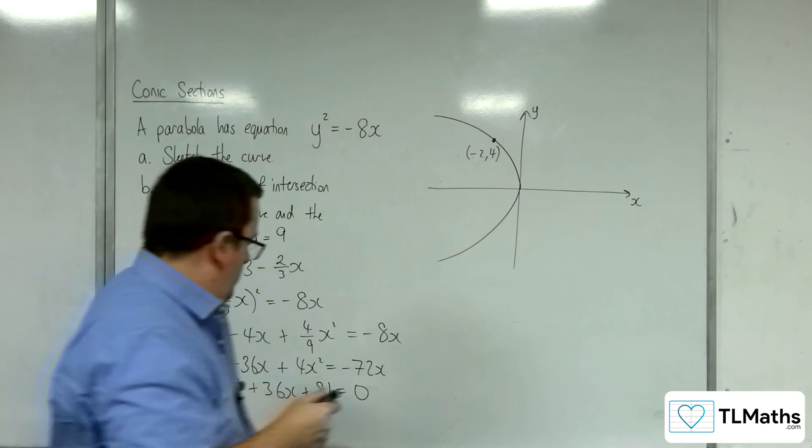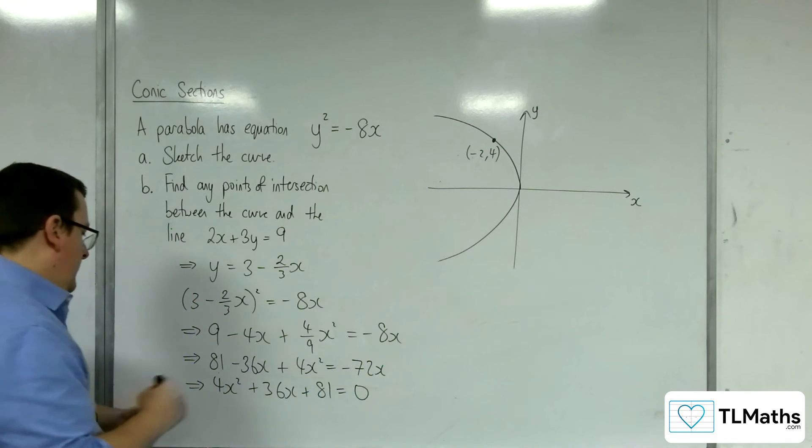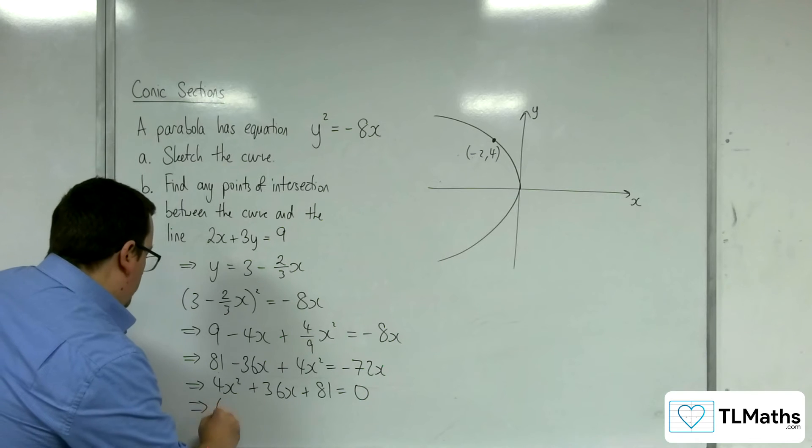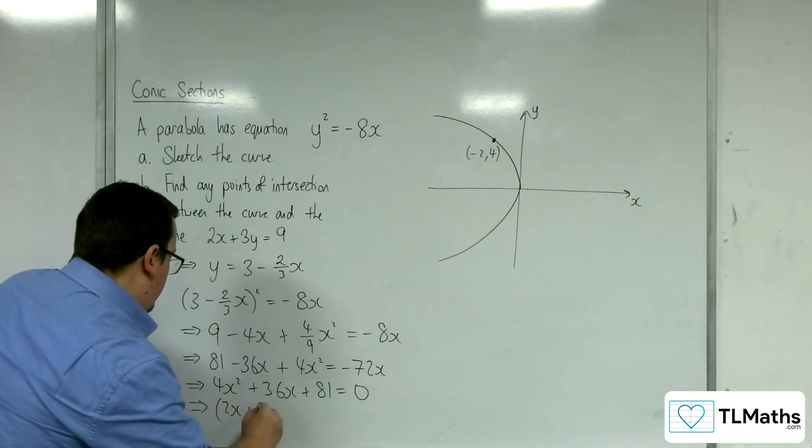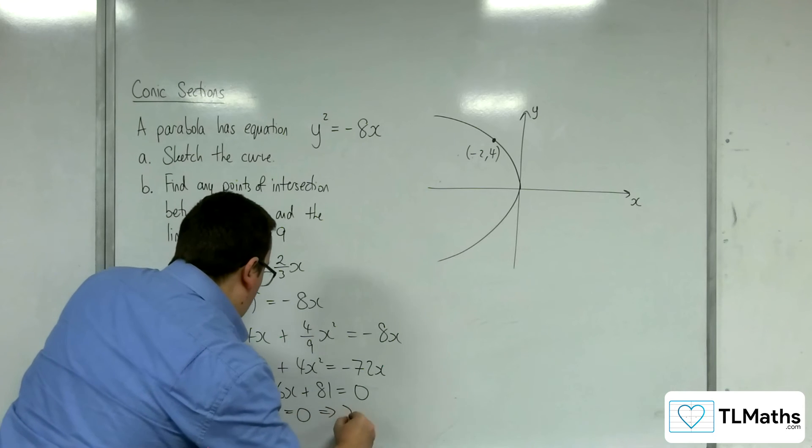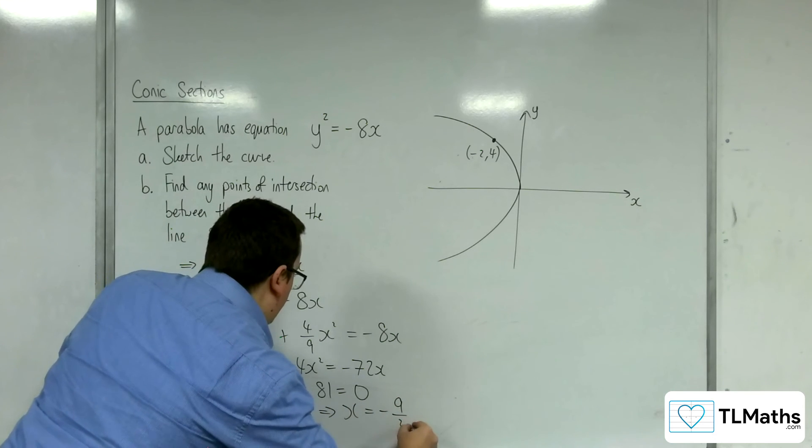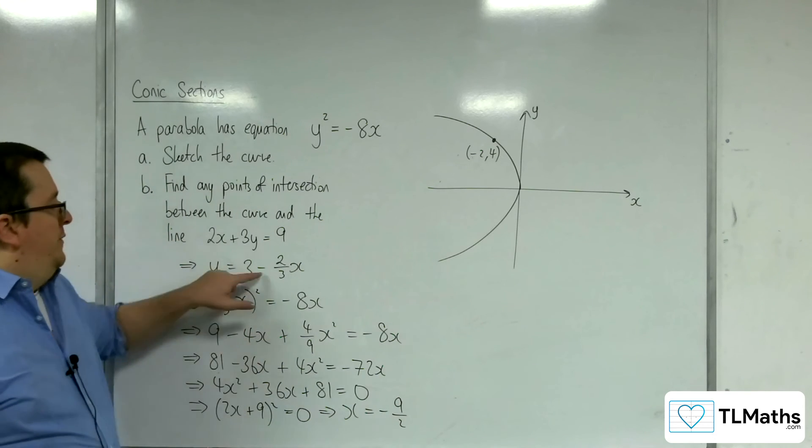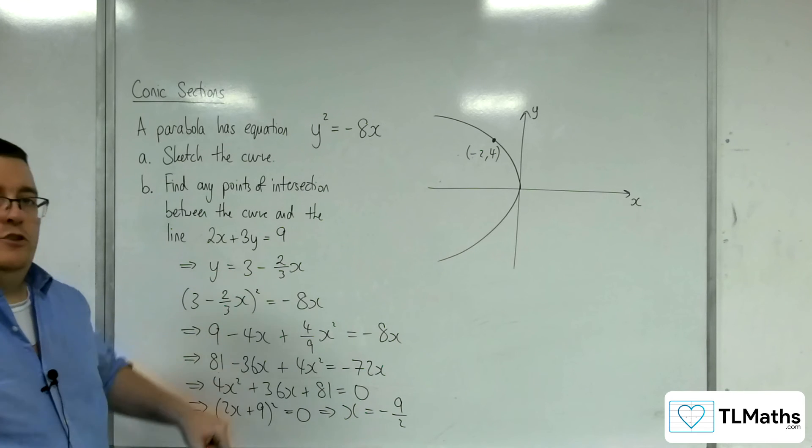That is actually 2x plus 9 all squared equals 0. So x must be equal to minus 9 half. So there's only one point of intersection. So this line must be a tangent to the curve.